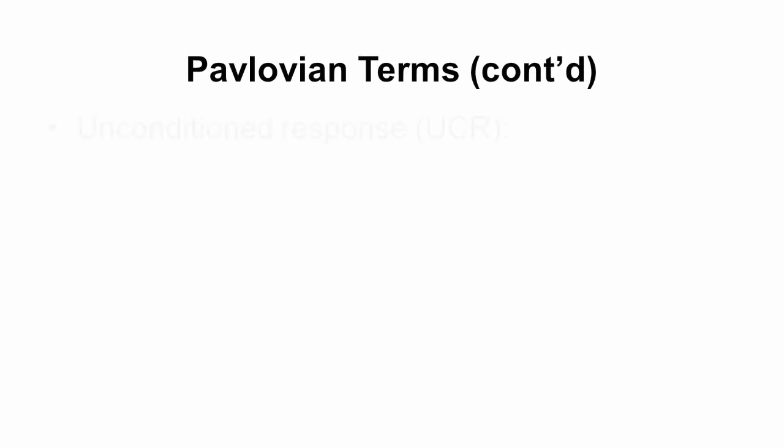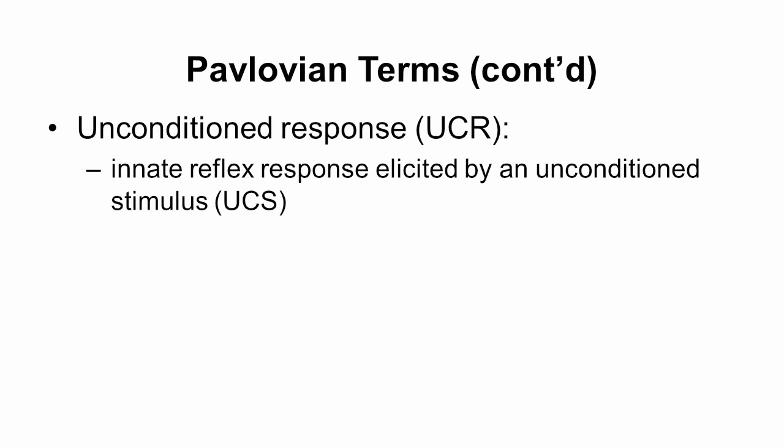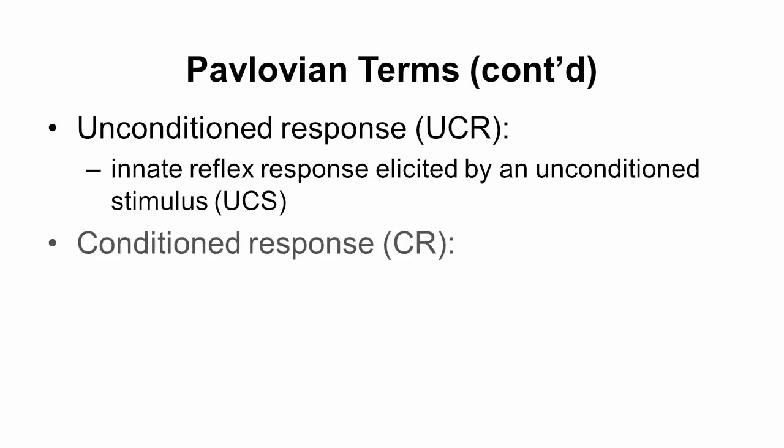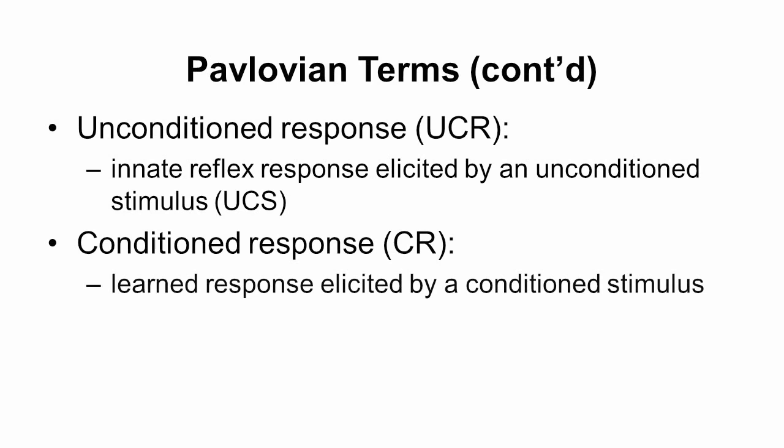There are two kinds of responding. You have unconditioned responses, the UCR — those are the reflexes, things a person automatically does when exposed to an unconditioned stimulus. Then you have conditioned responses, CR — these are learned responses produced by conditioned stimuli. You can always replace the word 'conditioned' with 'learned': unlearned stimuli produce an unlearned response, and learned stimuli produce a learned response.